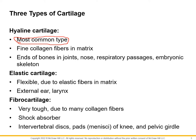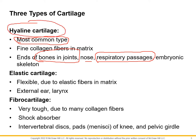Hyaline cartilage is what our bone starts off as. It is the respiratory cartilage — the rings in the respiratory tract. It is the cartilage of the nose, the cartilage of the ribs. At the end of the bones it's the articular cartilage. If you've ever eaten a chicken drumstick, that kind of nasty white piece of cartilage at the tip is hyaline cartilage.